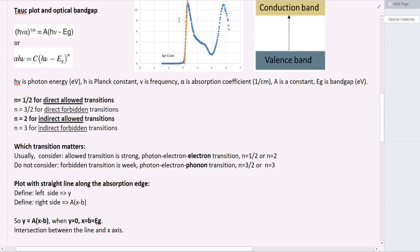Here, I give you the graph. So the y-axis is really about the left part of the equation. The x-axis is about h mu, photon energy. So we just need to change the optical absorption, do some math, and plot this graph.